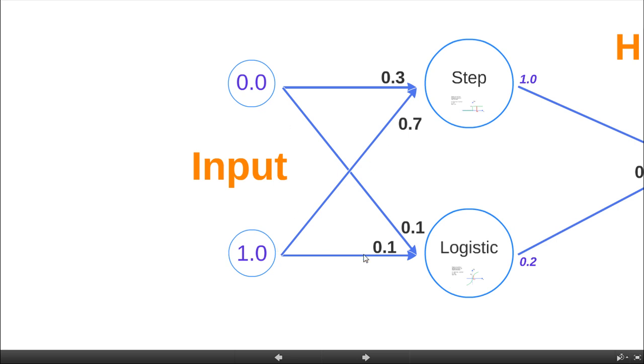And also here, this one is connected here and also here. These numbers represent the weights of the connections. It is a very important issue in neural networks.